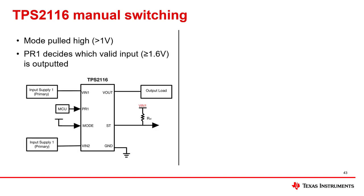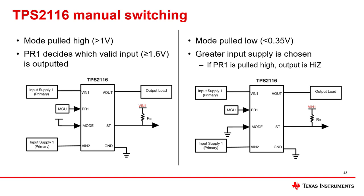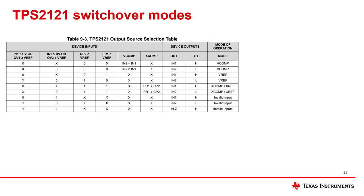With mode pulled high, a high PR1 voltage will select VN1, whereas a low PR1 voltage will select VN2, as long as the input is valid (greater than 1.6V). With mode pulled low, the greater supply is chosen unless PR1 is pulled high, in which case the device will not select either input and the power mux will output high-Z.